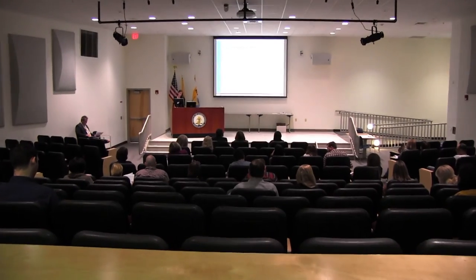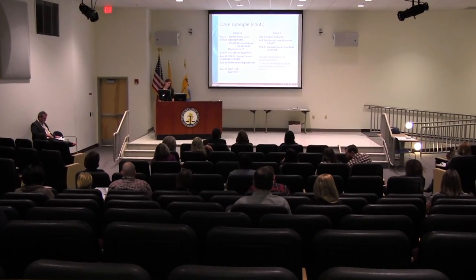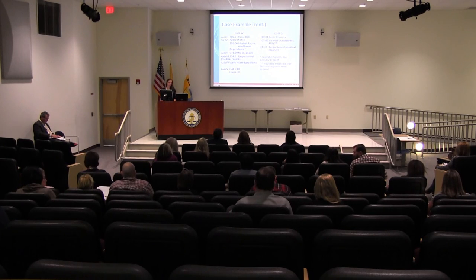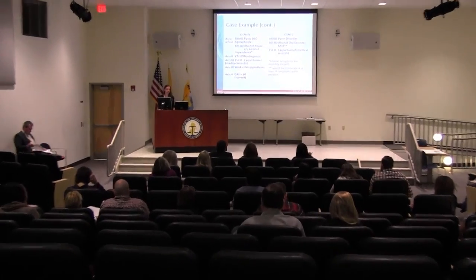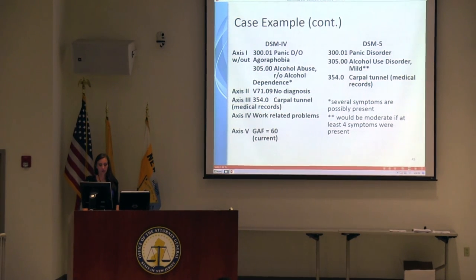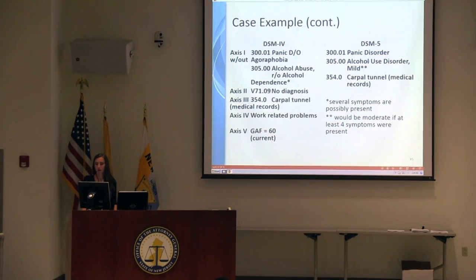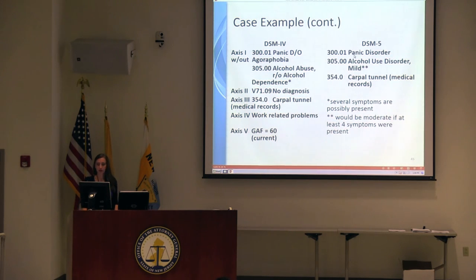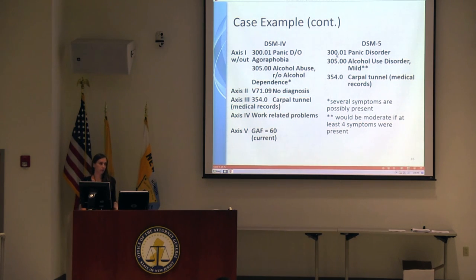On the DSM-4 diagnosis, you would have had separate axes. On the DSM-5, you have panic disorder as the primary diagnosis, alcohol use disorder mild as secondary, and Parkinson's syndrome noted as a medical condition. Panic disorder would be listed first because it was the presenting condition and we're thinking the client is drinking to address that.